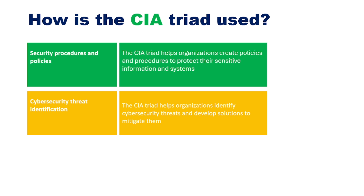The CIA Triad also helps your security team to identify threats and develop solutions to mitigate them. For example, looking at the analogy of files being saved on file servers or shared folders, the planning itself would help folder owners or the IT team develop solutions — such as having permissions, password protection, or encryption of the data secured in that particular location.